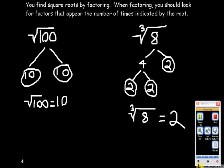You find square roots by factoring. You find any kind of root by factoring, not just square roots. In factoring, you should look for factors that appear the number of times indicated by the root. For example, you can factor 100 into two tens. You can factor 8 into two twos.